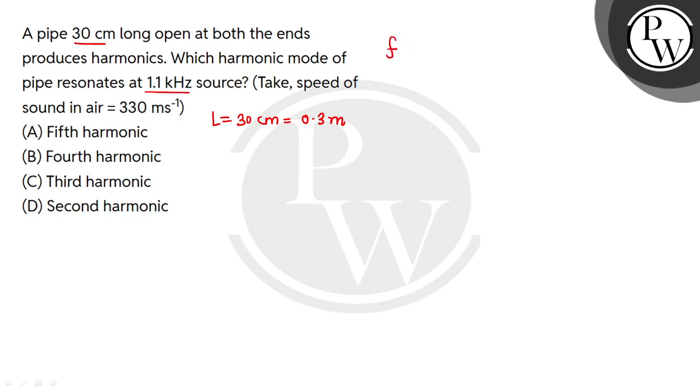The first harmonic mode frequency is F1, that is V by 2L. Second mode of vibration is 2 times V by 2L, which is 2 times F1. Similarly, F3 equals 3 times V by 2L, which is 3F1.